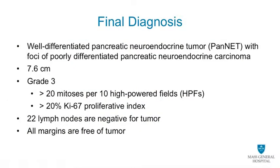By convention, the term PANNET, or pancreatic neuroendocrine tumor, implies a low-grade tumor. A grade 3 tumor implies a carcinoma. In this particular case, this large tumor was mostly low-grade, with only focal areas of high KI-67 proliferation index and only a focal area of carcinoma. The final diagnosis was therefore well-differentiated pancreatic neuroendocrine tumor with foci of poorly differentiated pancreatic neuroendocrine carcinoma.